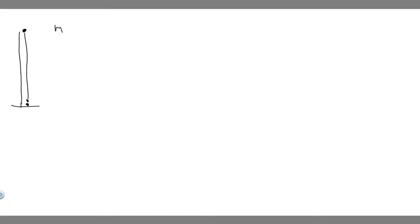So the baseball is going to start here, go all the way down, hit the ground. This is going to be our baseball at the beginning, baseball at the end. We know the mass of the baseball is going to be equal to 145 grams. What we want to do first is label the velocity at the beginning and end. I'm going to call the beginning V sub 1 and then V sub 2. We're trying to find the velocity at the end, or V sub 2.